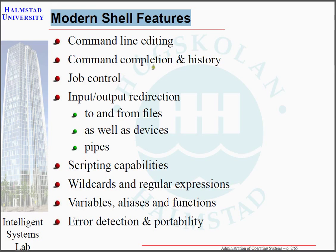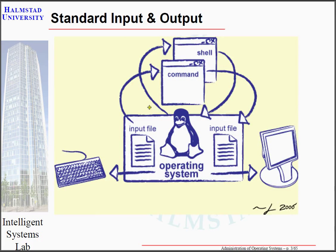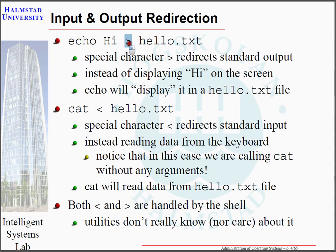We have already talked about the features of modern shells. You have hopefully had a chance to do some command line editing and command completion in the labs. There was a task about input/output redirection, but there is a lot more to investigate. Every process in Linux has some kind of input and output, typically connected to the keyboard and the screen. The two special characters for redirection are the greater-than and less-than signs — one redirects standard output, the other redirects standard input.